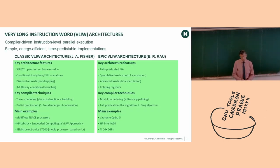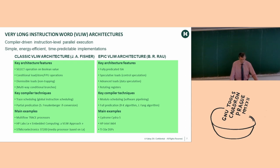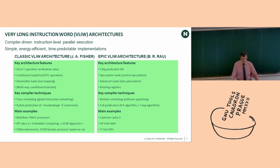All those cores are based on the VLIW — Very Long Instruction Word — architecture. It's basically compiler-driven extraction and exploitation of instruction-level parallelism. The compiler has to find groups of parallel instructions. It's a good choice for some classes of application, especially acceleration, because it's simple to implement, energy efficient, time predictable — which matters for automated driving — and implementation is easier.